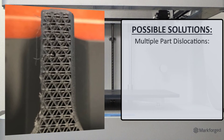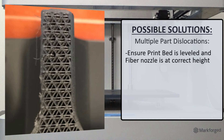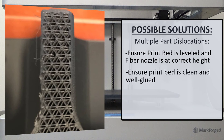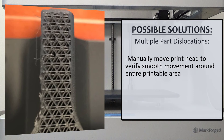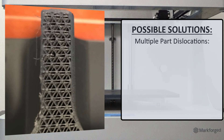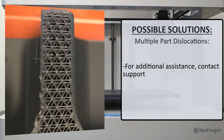If the dislocation happens on all parts, ensure that the print bed is well leveled and the fiber nozzle is at the correct height. Ensure that the bed is clean and well glued, that your plastic is dry, and that your belts are properly tensioned. Then manually move the print head to verify that it can move smoothly around the entire printable area of your printer. Finally, ensure that the garolite on your print bed is not peeling up. If you need additional assistance after performing these troubleshooting steps, please contact support.